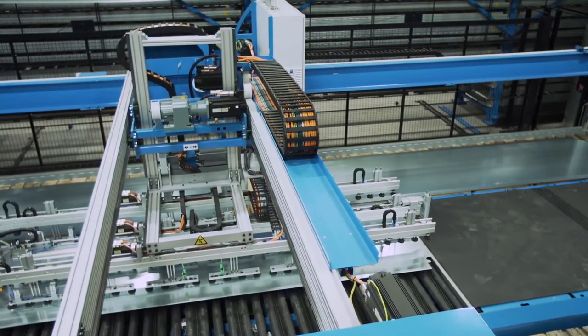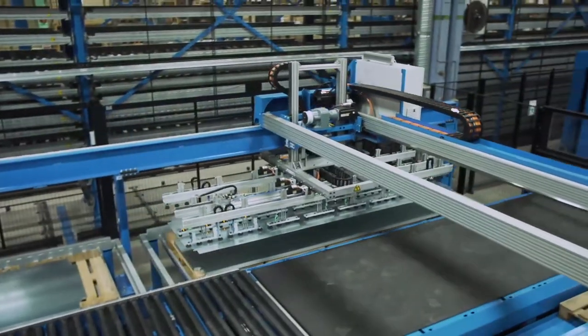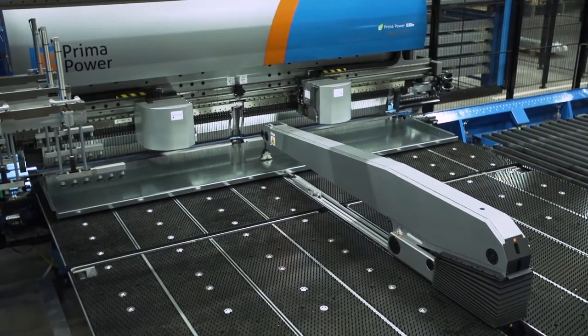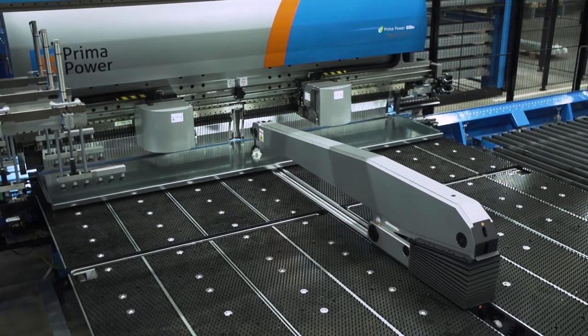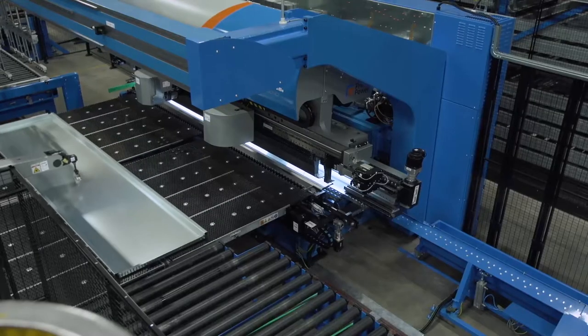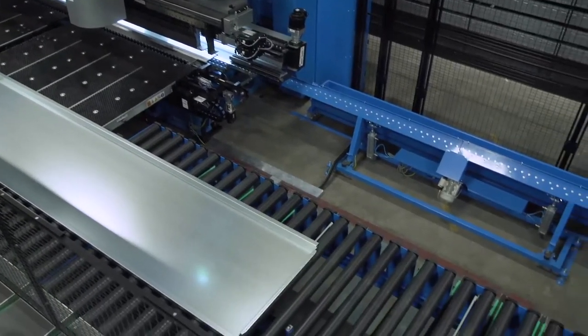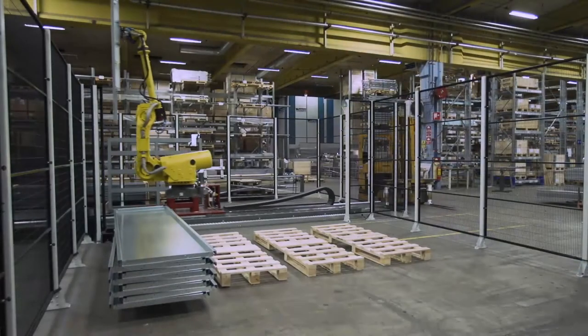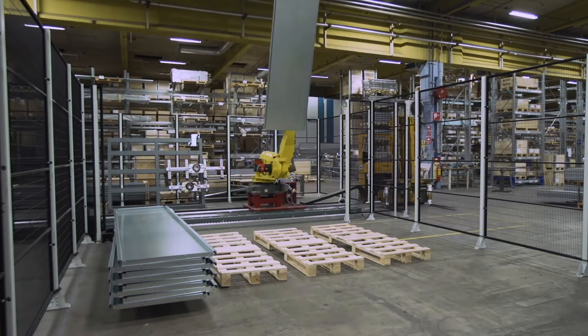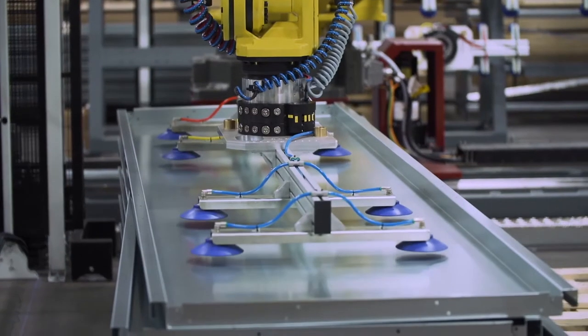After punch and nibbling, the machine sheets move on to the panel folding machine. This can perform simple or complicated folds. The completed parts are fed out.